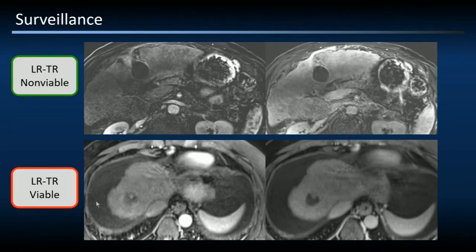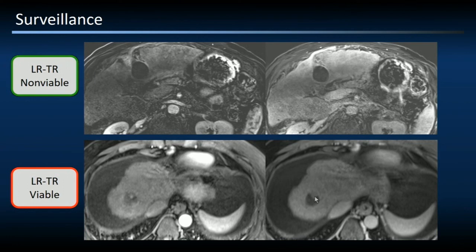Two case examples from our practice: first, a TR non-viable lesion — a well-treated lesion with thermal ablation — where on arterial phase and later venous phase imaging there is no mass-like or eccentric enhancement in or around the treatment cavity. In contrast, this patient who had drug-eluting bead TACE therapy shows significant residual nodular enhancement — a hypervascular focus along the anterior aspect of the treatment cavity with isointensity or slight hypointensity on later-phase imaging — indicating obvious recurrent tumor, classified as TR viable.